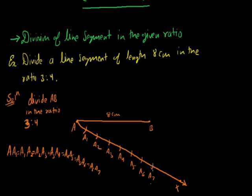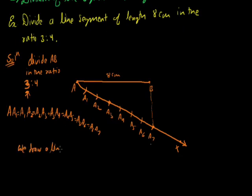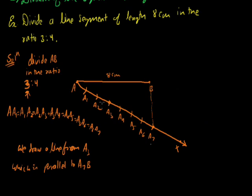Now we connect A7 to B. Since our ratio's first part is 3, we will draw a line from point A3 which is parallel to A7B. We draw a line from A3 which is parallel to A7B.